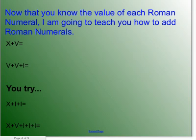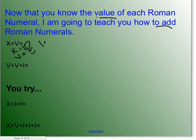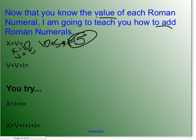Now that you know the value of each Roman numeral, I'm going to teach you how to add Roman numerals. X plus V equals — X equals 10 and V equals 5, and 10 plus 5 equals 15. That is your answer.